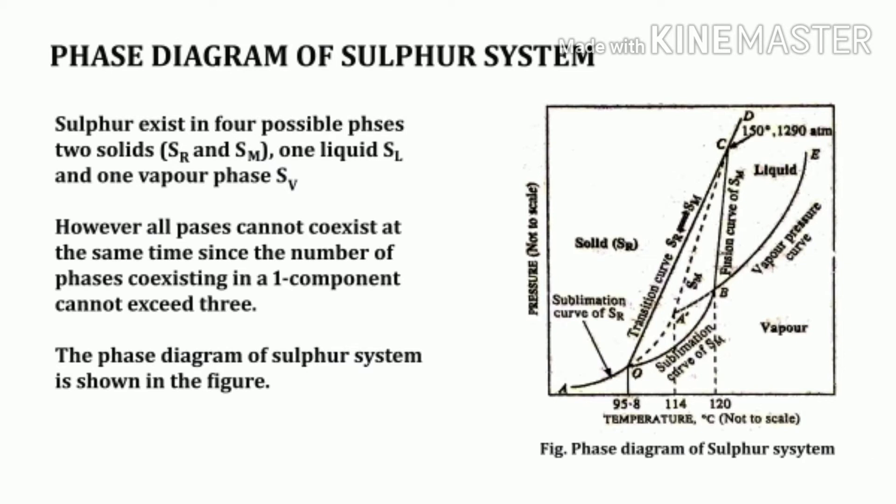The liquid form of sulfur undergoes notable changes in color and viscosity when heated, and ultimately boils at 444.7°C. Thus sulfur can exist in four possible phases: two solid phases (rhombic sulfur and monoclinic sulfur), one liquid phase, and one vapor phase — denoted Sr, Sm, Sl, and Sv respectively. Not all phases can coexist simultaneously, since the number of phases coexisting in a one-component system cannot exceed three.